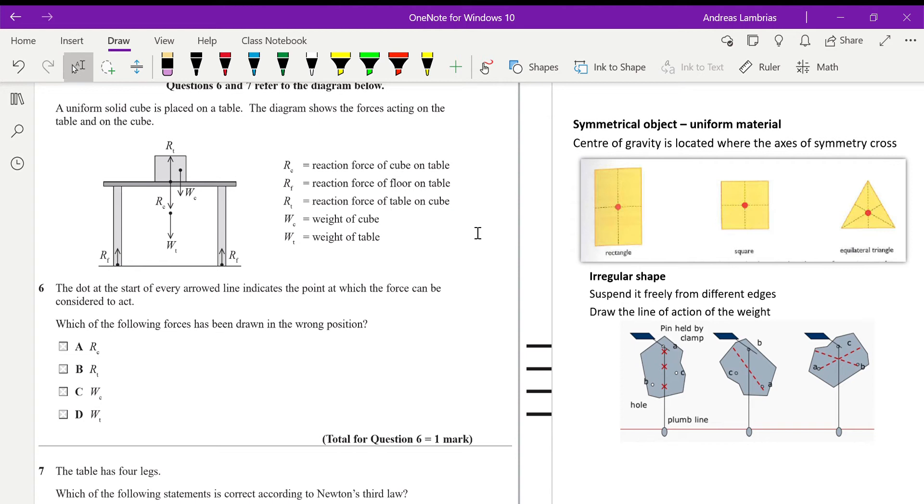The question is asking us to find which of the forces has been drawn in the wrong position. Now just some reminders about the center of gravity. The center of gravity on a symmetrical object is located on the point where the axis of symmetry crosses. So in our cube we expect the center of gravity to be on the center since it is a uniform solid. However we can see that the weight of the cube is not drawn in the center so therefore the one that is drawn wrong is the weight of the cube.